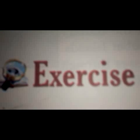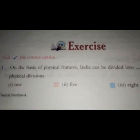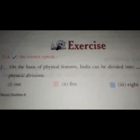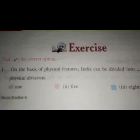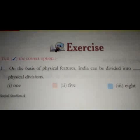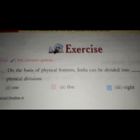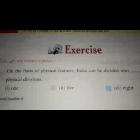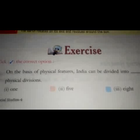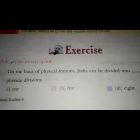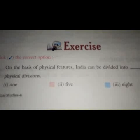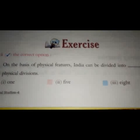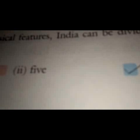Now let us do some exercise. Check the correct options. Your first question is: on the basis of physical features, India can be divided into how many physical divisions? Your options are: 1st — 1, 2nd — 5, 3rd — 8. The correct answer is 5.